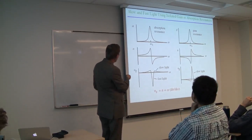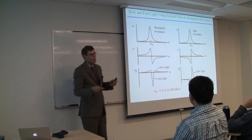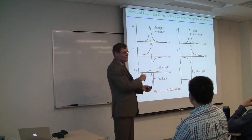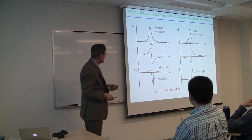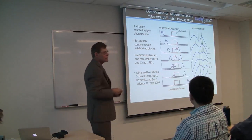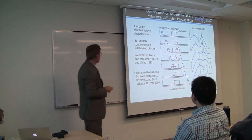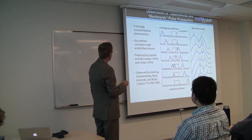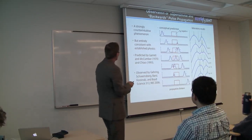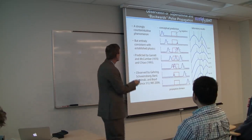If you have a gain resonance, this curve just flips over. You get slow light at line center, fast light in the wings. Now, what about backwards pulse propagation? This intrigued me so much that I really wanted to go to the laboratory and see light go backwards.